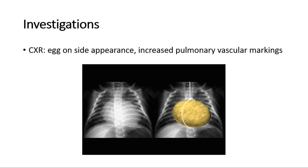To investigate for transposition of great arteries, we can do a chest X-ray where a significant finding will be the egg-on-side appearance of the heart, with often increased pulmonary vascular markings. This egg-on-side appearance is due to the anterior-posterior relationship of the great vessels, a narrow vascular pedicle, and a hypertrophied right ventricle.